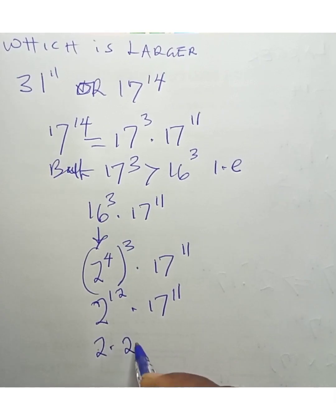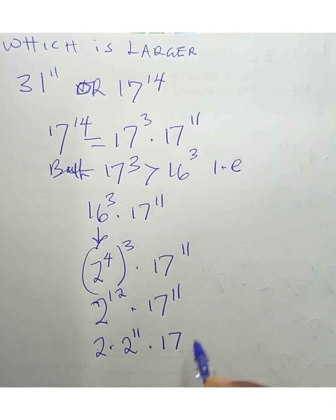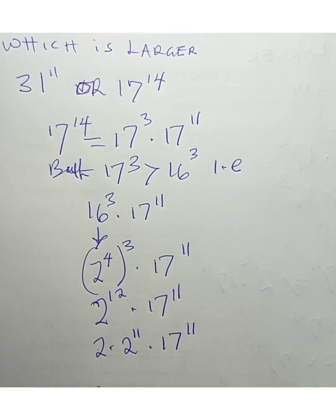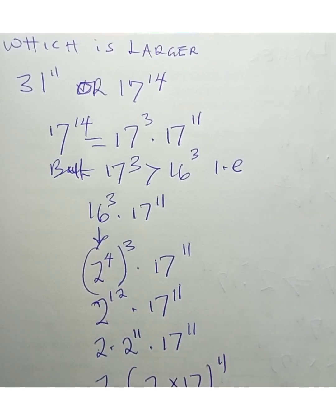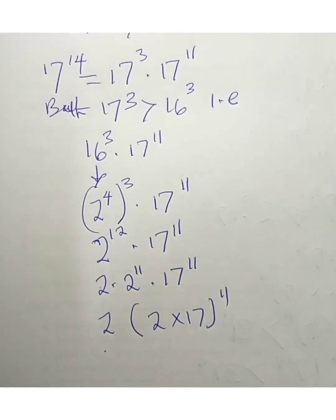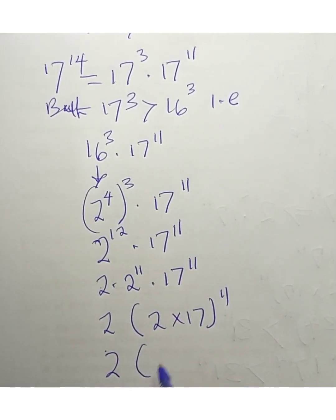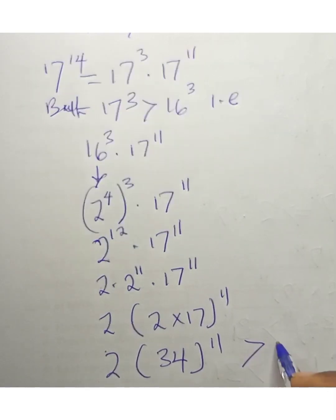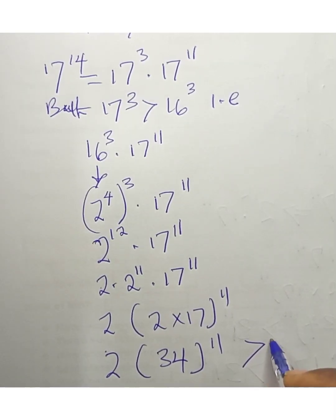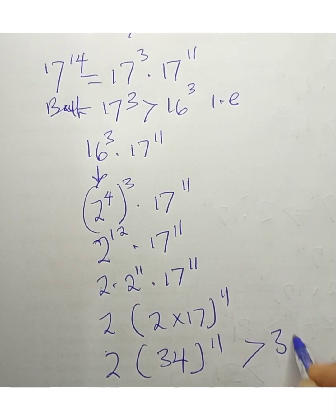So 2 to the power of 12 times 17 to the power of 11 can be written as 2 to the power of 1 times 2 to the power of 11 times 17 to the power of 11. This becomes 2 times (2 × 17) to the power of 11, which becomes 2 times 34 to the power of 11.